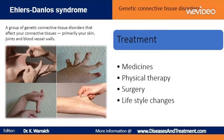Blood pressure: because blood vessels are more fragile in some types of Ehlers-Danlos syndrome, your doctor may want to reduce stress on the vessels by keeping your blood pressure low. To protect the skin, doctors recommend using sunscreen and mild soaps. Taking extra vitamin C can help reduce bruising. Physical therapy and exercises to strengthen the muscles supporting the joints can help prevent joint injuries. Braces also help stabilize joints.